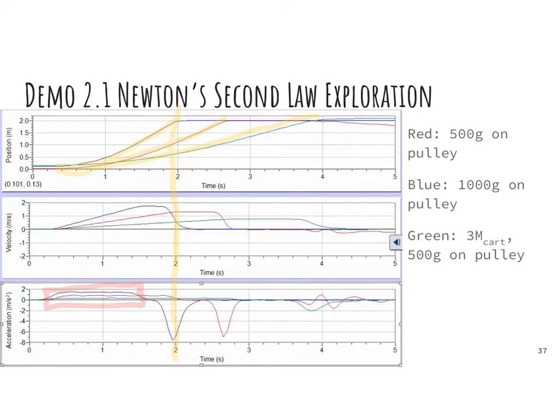As we examine the graphs in the middle, we see a linear velocity versus time graph, indicating that we have constant acceleration.